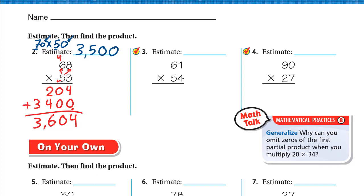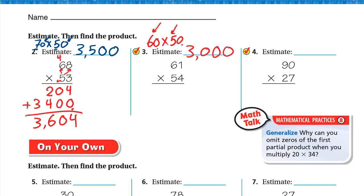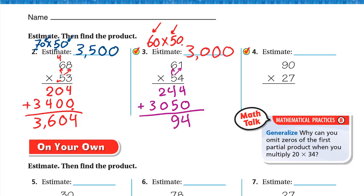Problem 3: 61 times 54. Estimate: 61 rounds to 60 (weak digit 1) and 54 rounds to 50 (weak digit 4), so 60 times 50 — write two zeros, 6 times 5 is 30, estimate is 3,000. Multiply: 4 times 1 is 4, 4 times 6 is 24. Then write 0, multiply by 5: 5 times 1 is 5, 5 times 6 is 30. Add the two products: 4 plus 0 is 4; 4 plus 5 is 9; 2 plus 0 is 2; 3 plus nothing is 3. Answer: 3,294.